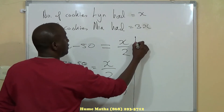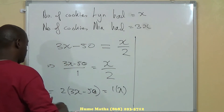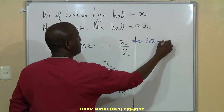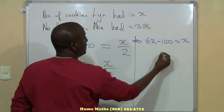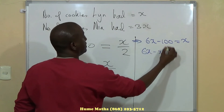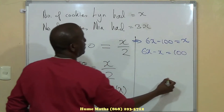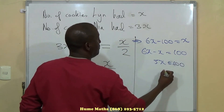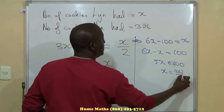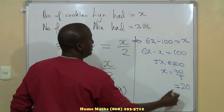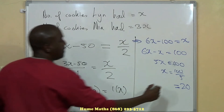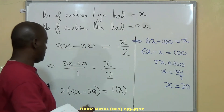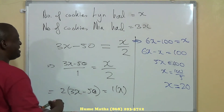We then have 2 into 3X minus 50 equals 1 times X. So 2 multiplied into 3X minus 50 gives us 6X minus 100 equals X. Bringing all the X's to one side: 6X minus X equals 100, so 5X equals 100. If 5X equals 100, then X equals 100 over 5, which equals 20. So Lynn started with 20 cookies and Nia had 60 cookies.